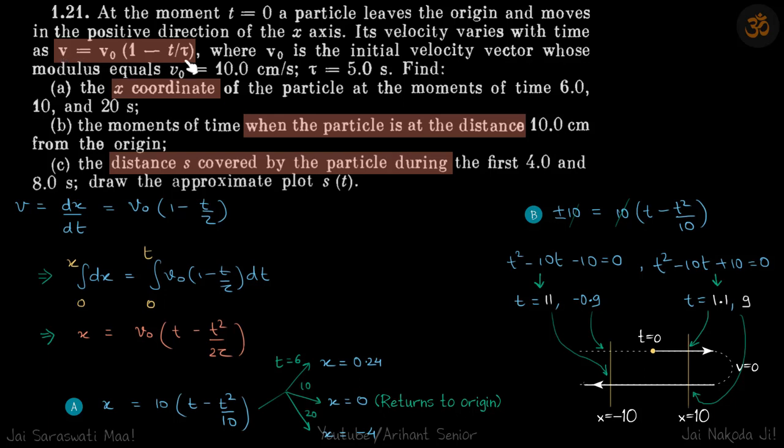We are given velocity as a function of time. We need to find x and the time when it is at a certain distance, and the distance covered during a given time. So we'll see one by one.